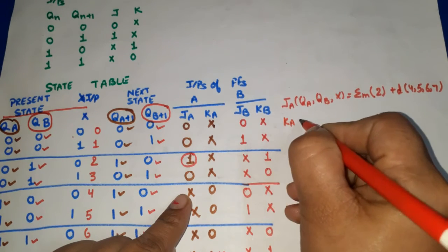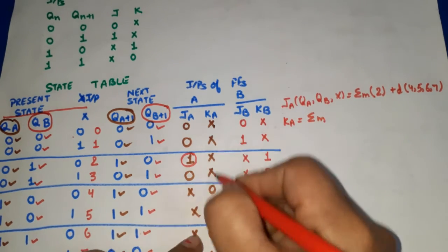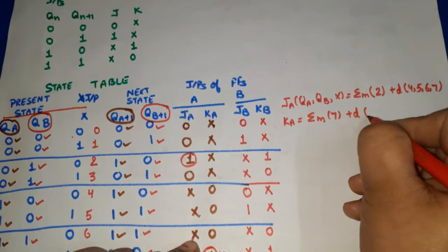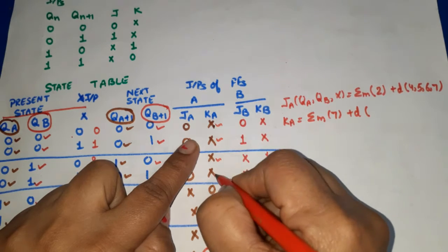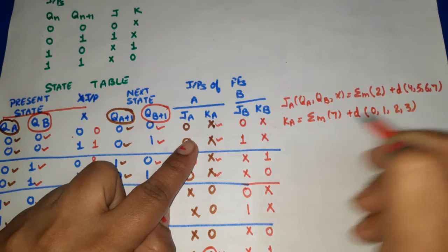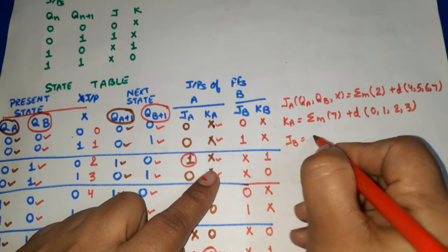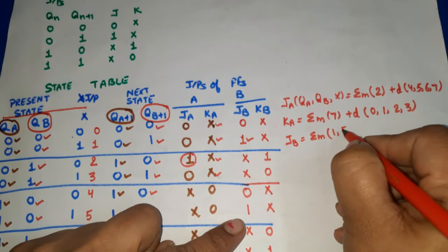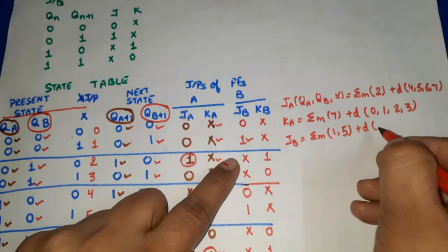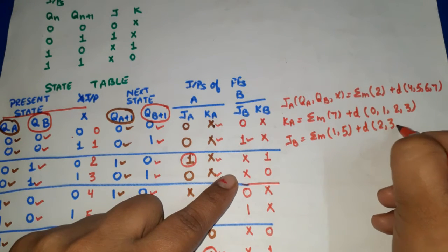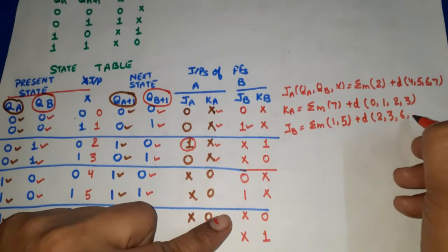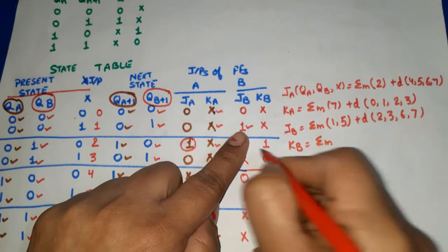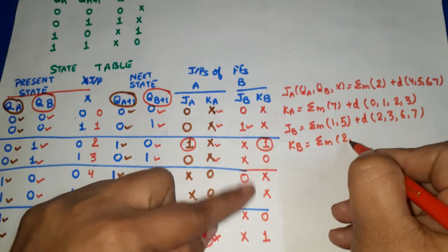For JB: minterms 1 and 5, plus don't cares at 2, 3, 6, and 7. For KB: minterms 2 and 7, plus don't cares at 0, 1, 4, and 5. These are the equations we will now simplify using K-maps.